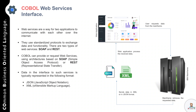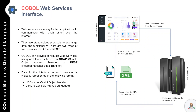A user has initiated a request from the web application to get data from the mainframe. The mainframe receives the request, and the application hosted on IBM mainframe processes that request, generates the output in the desired format, and sends the response back to the web application. The data shared with the web application would be either in JSON format or in XML format.